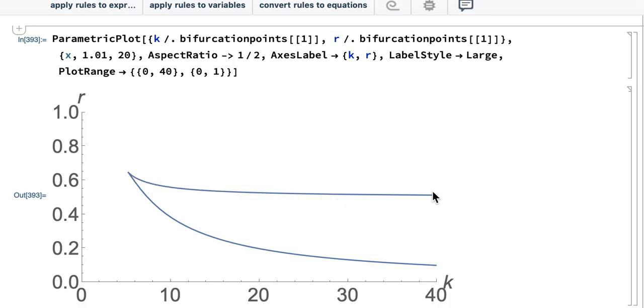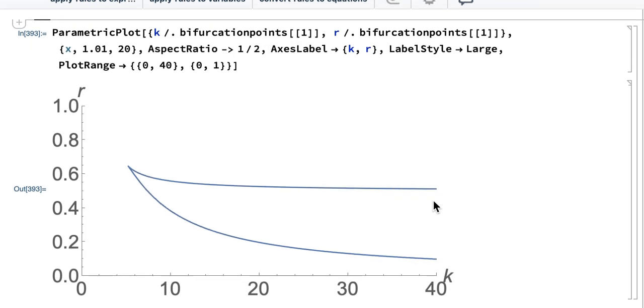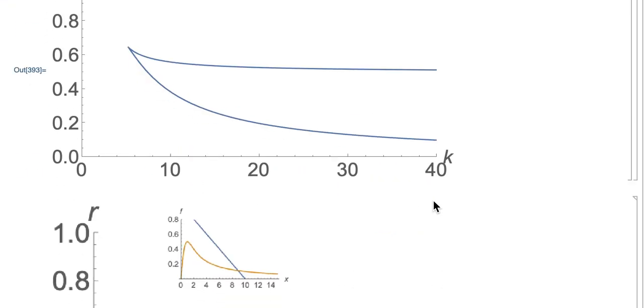This information isn't that easy to understand yet, but we know that these saddle node bifurcations are separating regions where we have one fixed point from regions where we have three fixed points and two of them are stable. When I say one fixed point, I mean one fixed point with positive population. We do always have that zero population fixed point that I'm ignoring as I think about this analysis.